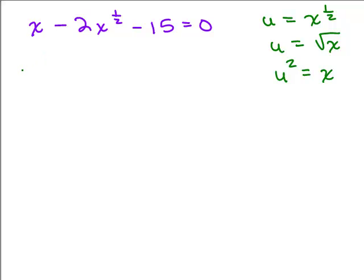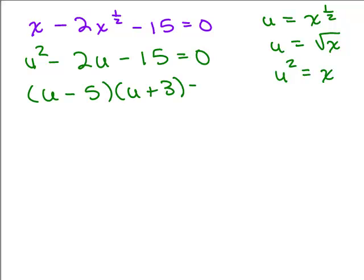So if we want to do a u substitution, instead of writing x, I could write u squared. And instead of writing x to the 1 half, I could write u minus 15. This is how I could make it look like a quadratic equation. So we could solve this, this isn't too bad to factor: u minus 5 times u plus 3 equals 0.